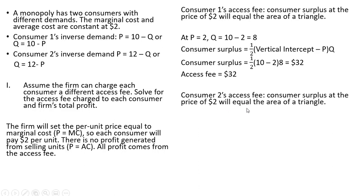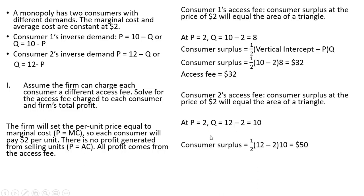For consumer 2's access fee, the consumer surplus at the price of $2 will equal the area of a triangle. Taking $2 and plugging it into consumer 2's demand equation, 12 minus 2 means the consumer will buy 10 units. Consumer surplus is one-half times the vertical intercept — 12, from the inverse demand — minus the price of 2, times the quantity of 10. Solving that, we get $50. So the access fee — the membership fee — for consumer 2 is $50.